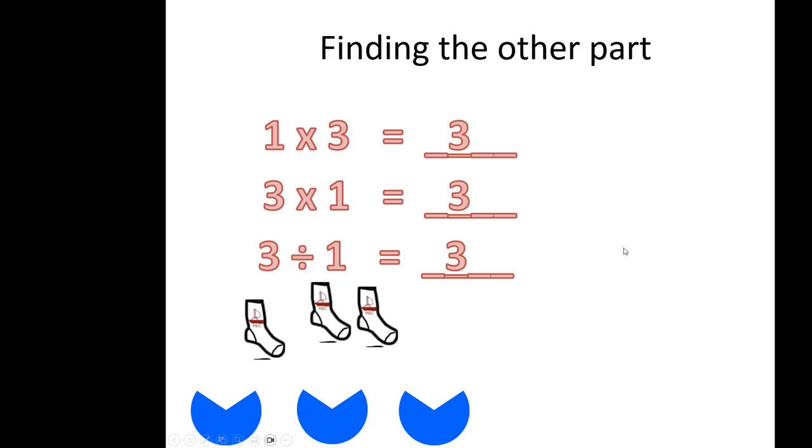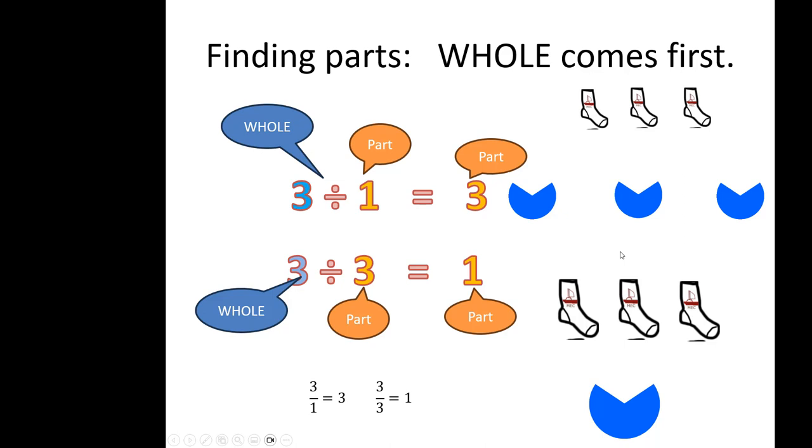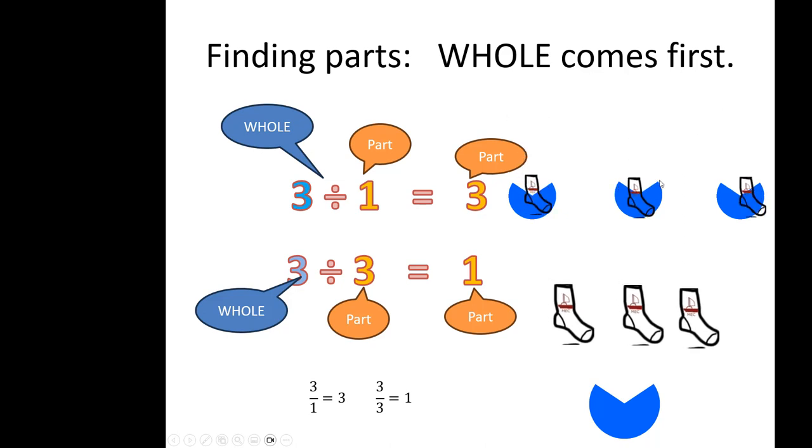We know the part is three if we divide into groups of one. The important thing is we have to start with the whole if we're looking for a part. Three divided by one is three. Three divided by three is one.